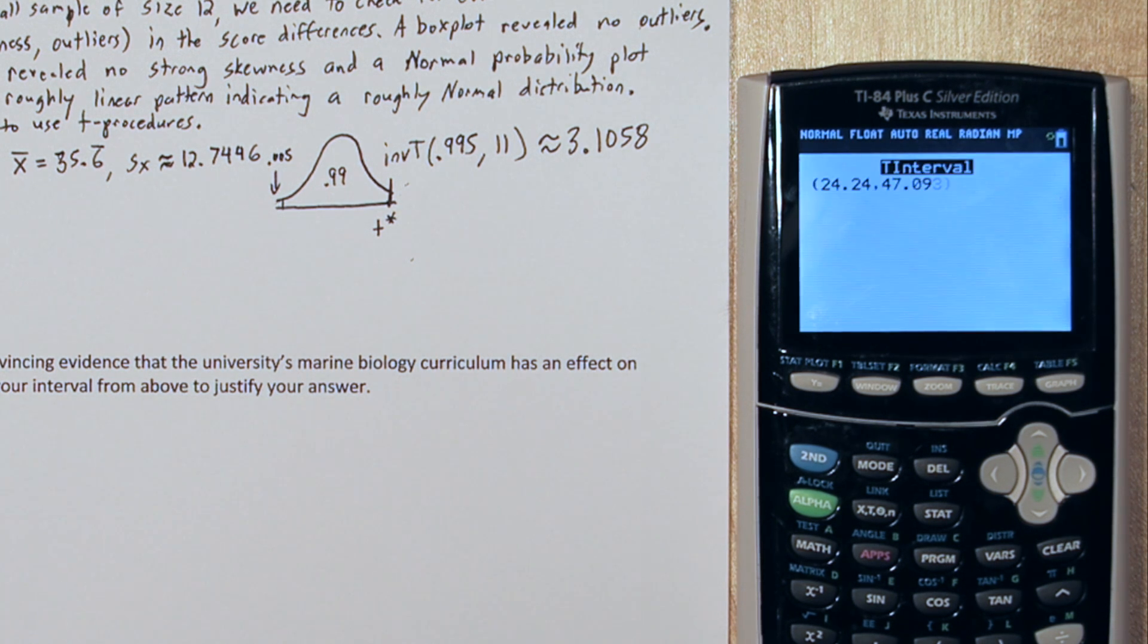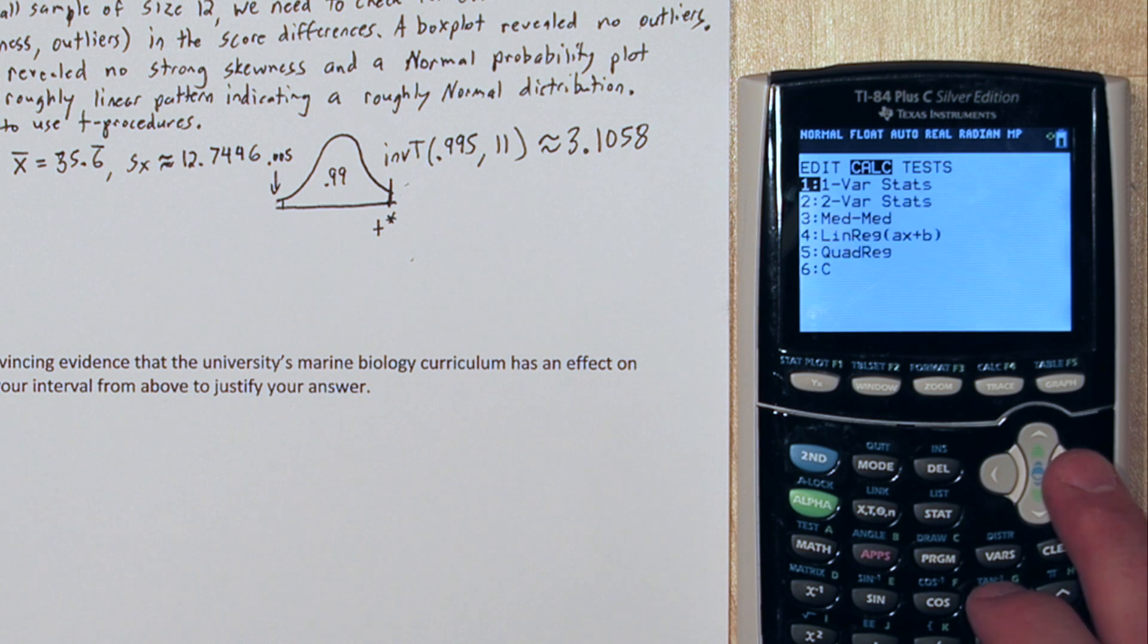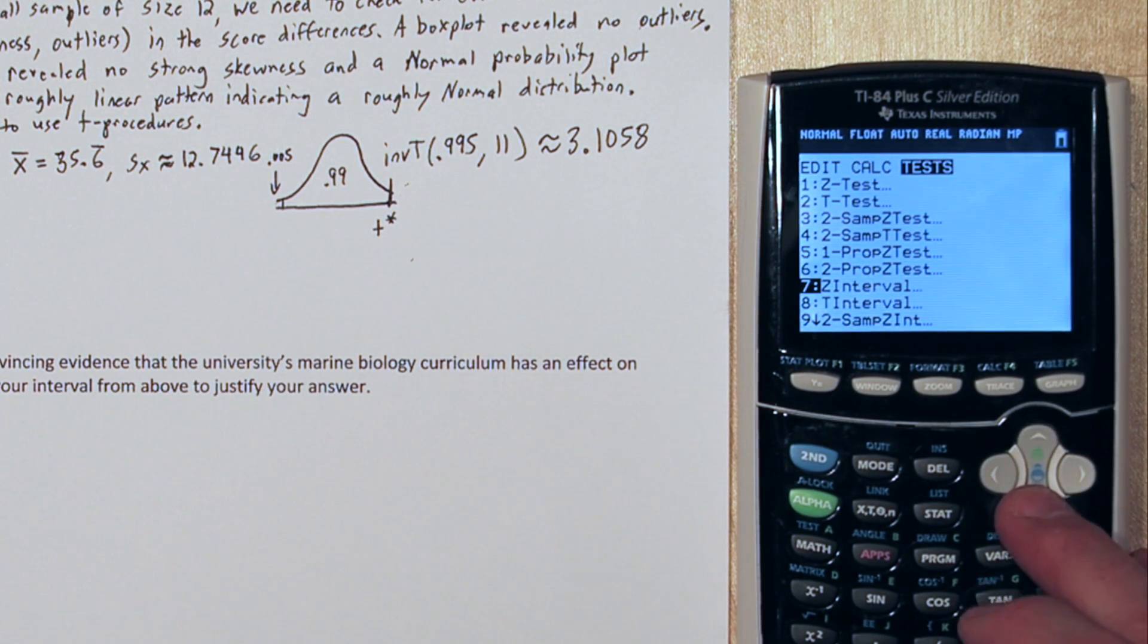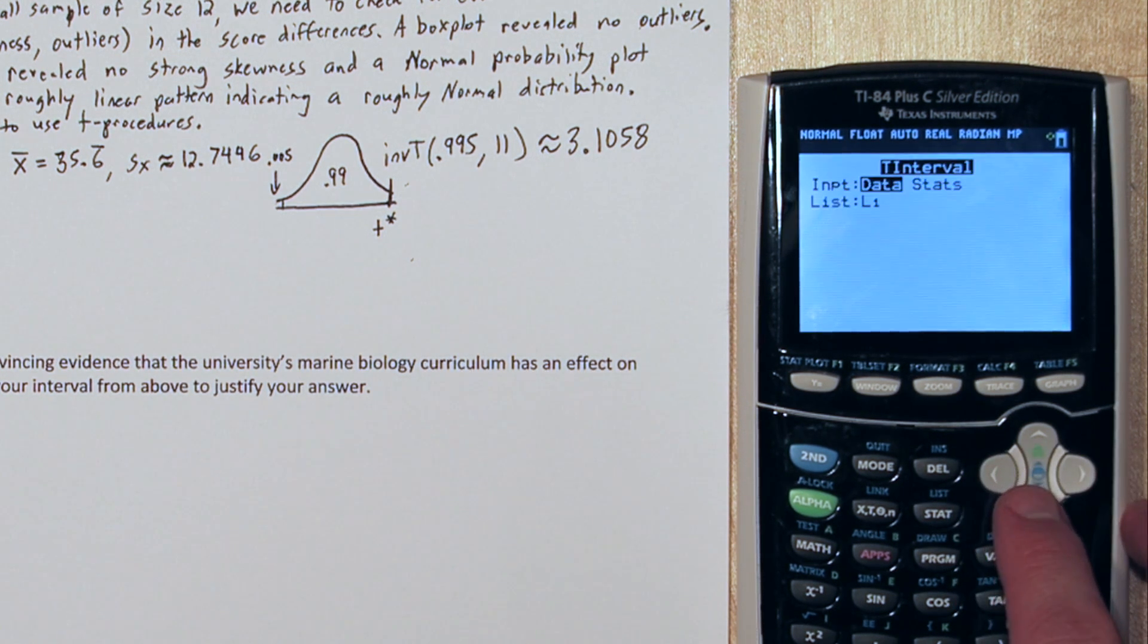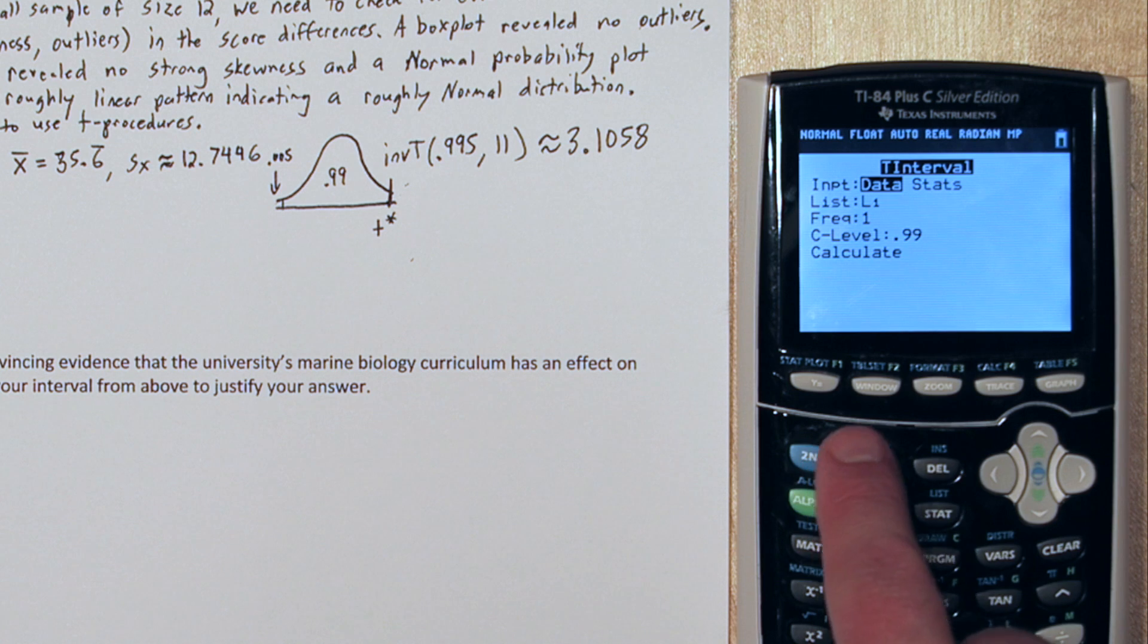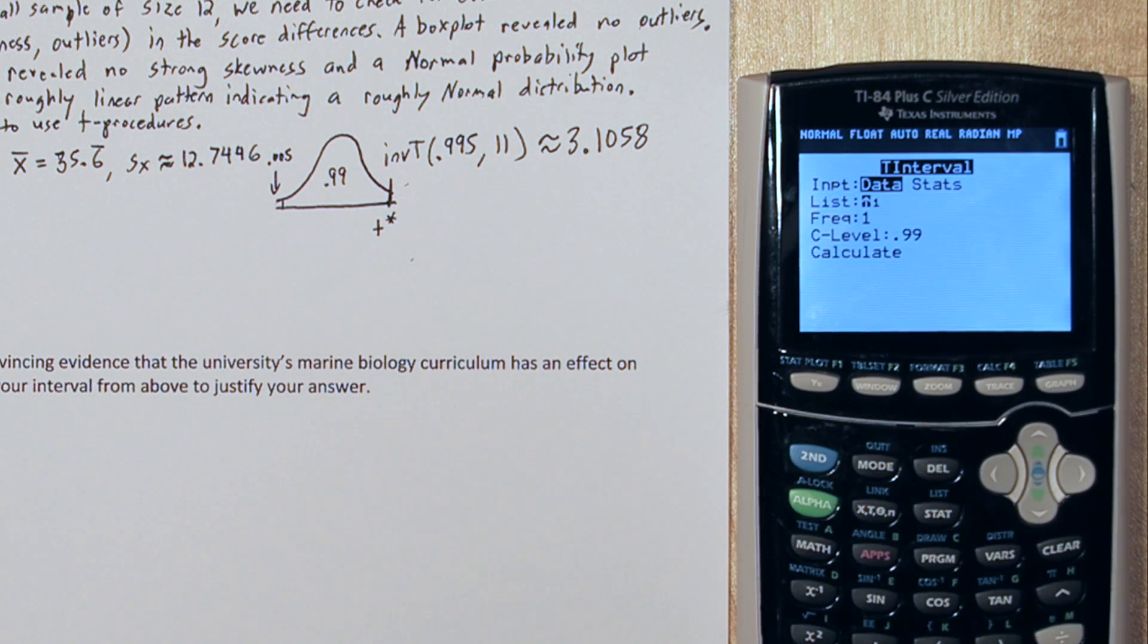Now, the reason all the data was already in there is because we ran one var stats on list 3 recently. Here's the other way to do it. On the t interval menu, click data, and our differences of scores are stored in list 3. So, if we go list 3 by pressing 2nd and then 3 and keep our confidence level at 99%, it ends up giving us the same interval. So, our interval is 24.24 to 47.093.